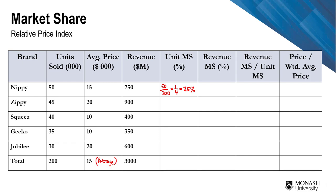What is the revenue market share? Revenue market share is the total revenue made by your brand divided by the total market revenue. Nippy is making 750 million and the total market revenue is 3,000 million. So that is 750 divided by 3,000, which also gives one over four — coincidentally also 25%.